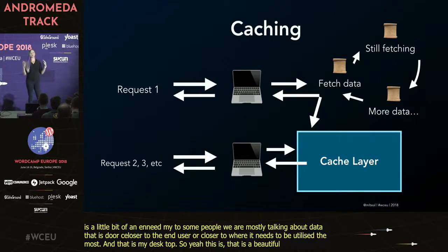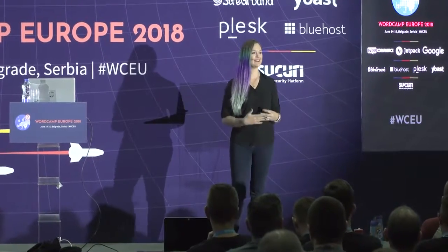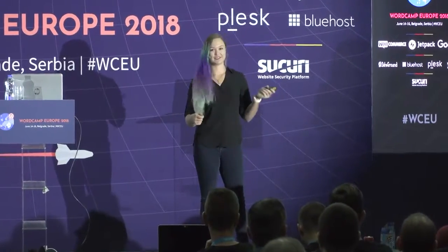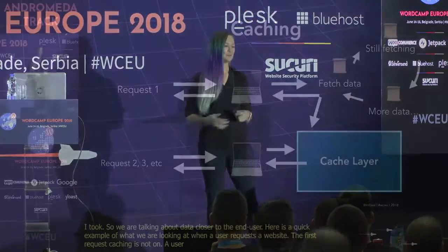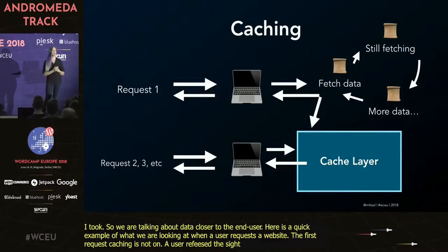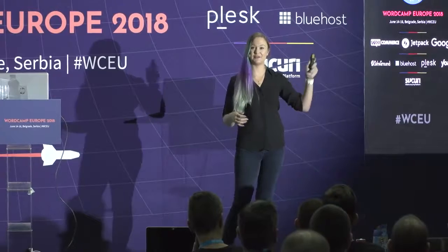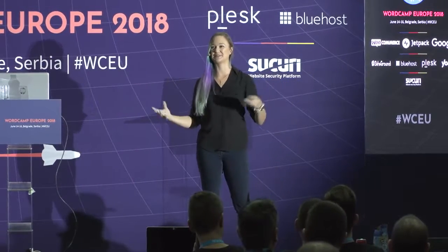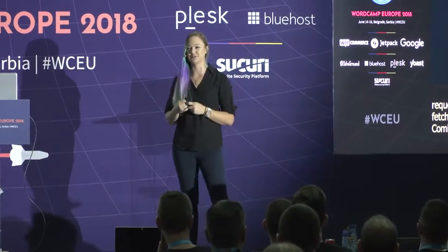We're talking about data that's stored closer to the end user. Here's a quick example of what we're looking at when a user requests a website. The first request — caching is not on — so a user requests the site, it goes out, it runs PHP, it's fetching data, perhaps making a remote API call, a remote database call, building out all the posts, maybe fetching some more data, building things, putting things together in PHP, and then turning the resulting information into the website.